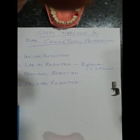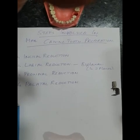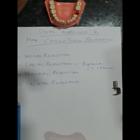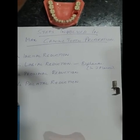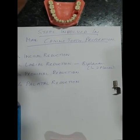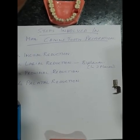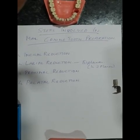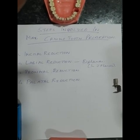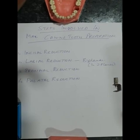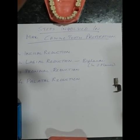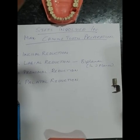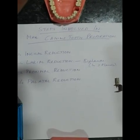Once you have given the depth orientation grooves in the incisal two-third region, then focus on the cervical one-third. While giving depth orientation grooves on the cervical one-third, the bur should be positioned along the long axis of the root, so that the grooves in the incisal two-third and the cervical one-third are at different angles. Once these grooves are given properly, we reduce the labial surface, taking care not to reduce more tooth structure than indicated by the depth orientation grooves.